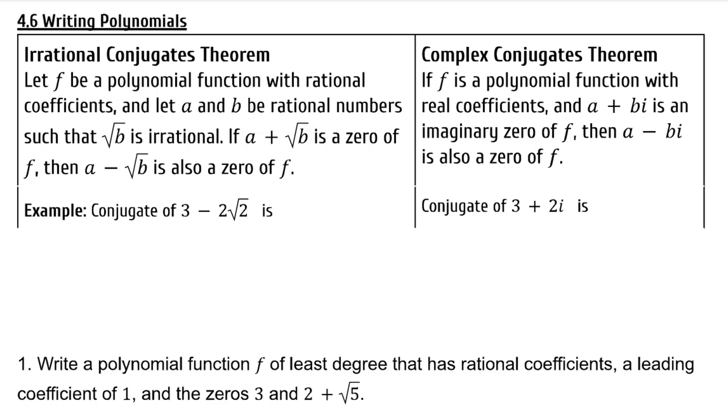Let's review. The conjugate of 3 minus 2 root 2 is 3 plus 2 root 2. We change the sign in front of the root. The conjugate of 3 plus 2i is 3 minus 2i. We change the sign in front of the imaginary part.